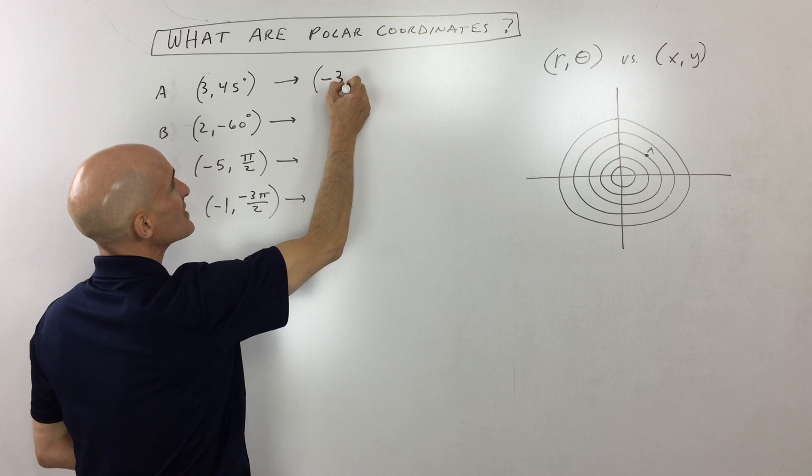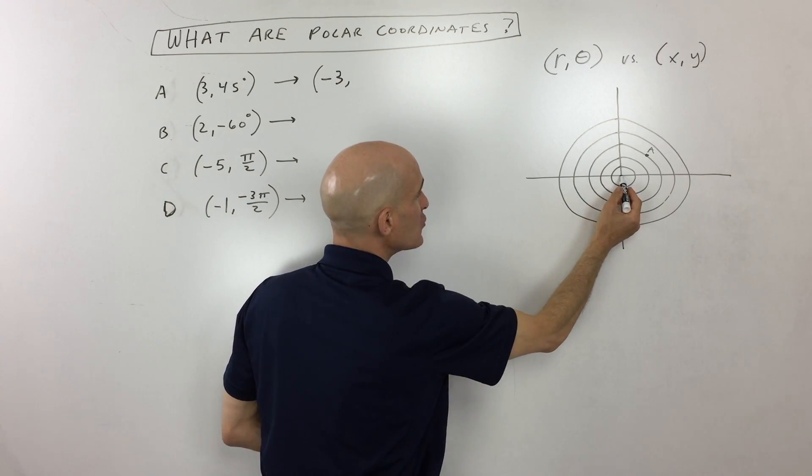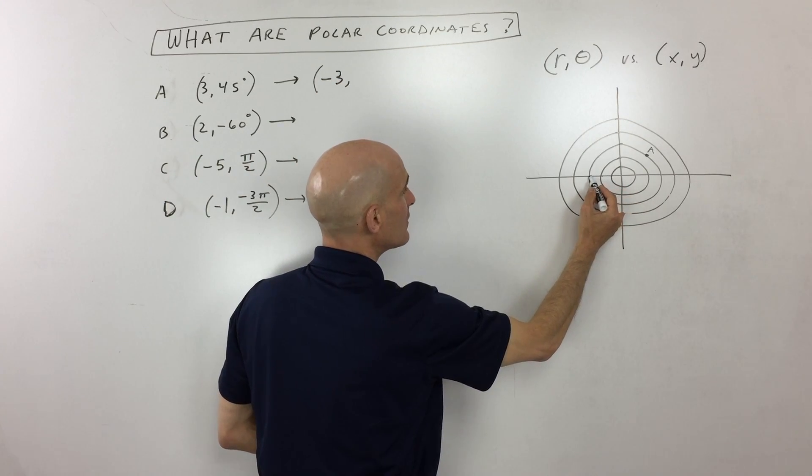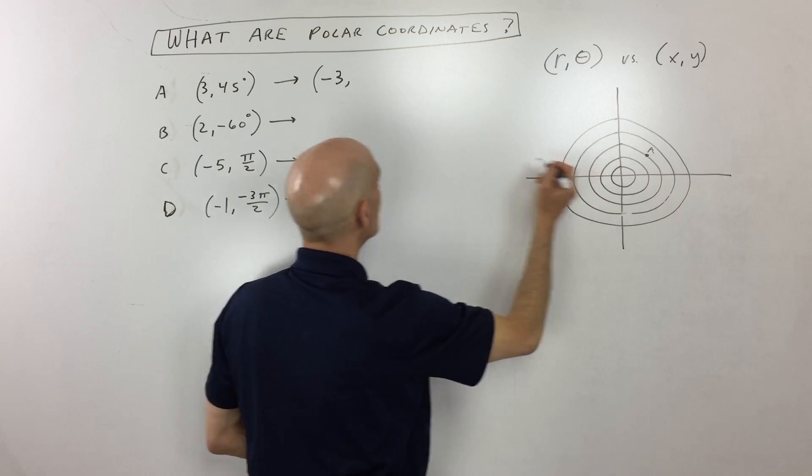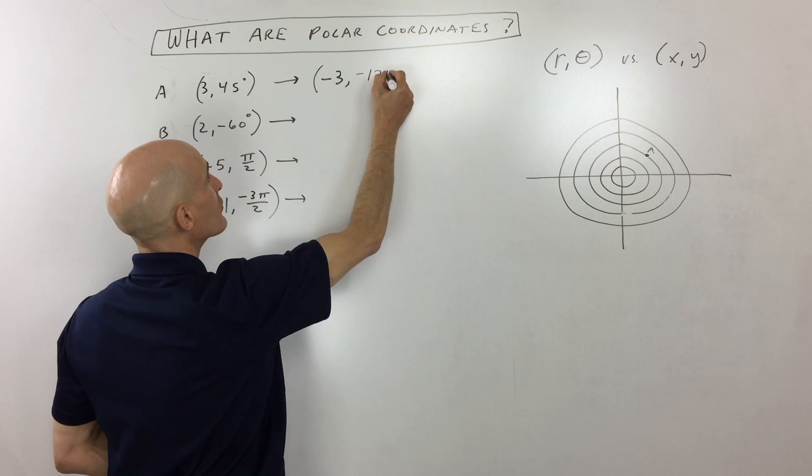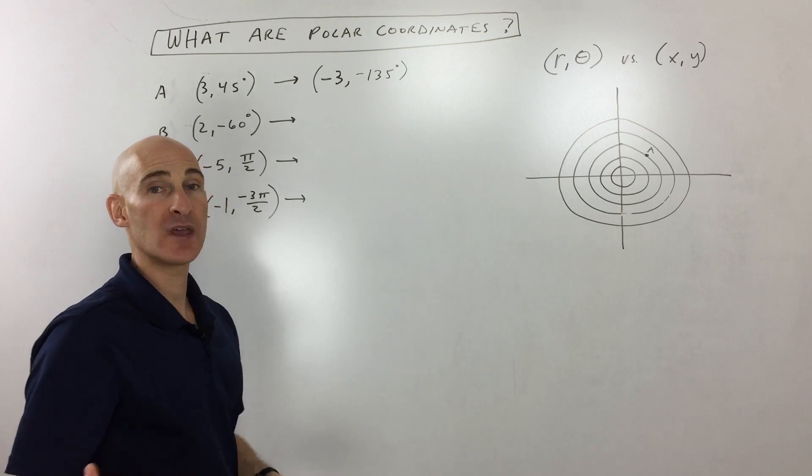But what we could do is we could say, well, this is a negative three. Now, when it's a negative, what we can do is we can go left three. And then since we're going to go clockwise now, we could go a negative 135 degrees. That's another way of locating that same point.